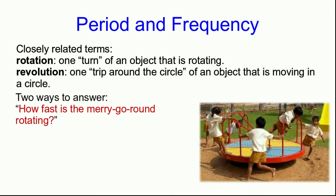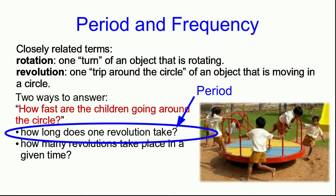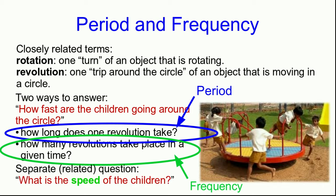And we have two ways to answer this question, whichever way we decide to phrase it. We could ask how long one revolution takes. Or we could say how many revolutions take place in a given time. The first way is called the period, the time for one revolution. And the second way is called the frequency, the number of revolutions per unit time. And these are related to something separate, which is what is the actual speed of the children. Speed in the sense that we've known ever since early in the course.